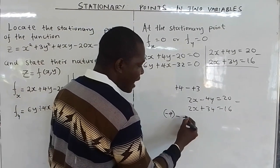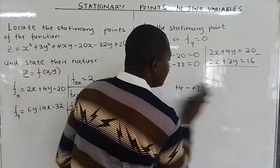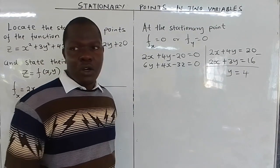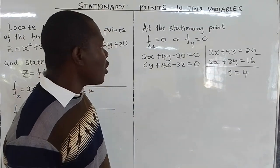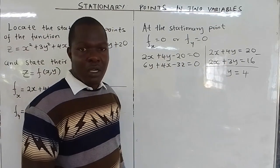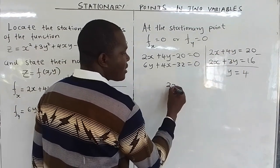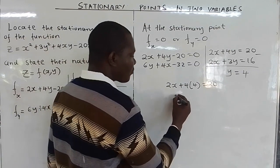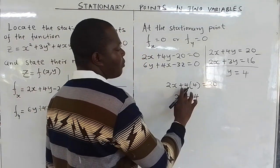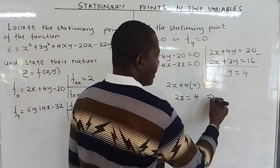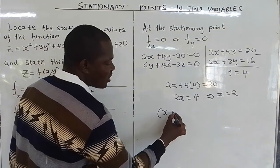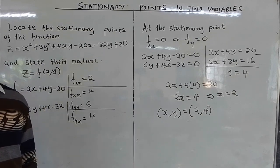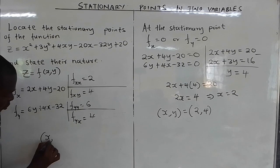Note the subtraction carefully: it is positive 4y minus positive 3y, leaving y = 4. Substituting y = 4 into equation 1: 2x + 4(4) = 20, so 2x + 16 = 20, giving 2x = 4, and therefore x = 2.